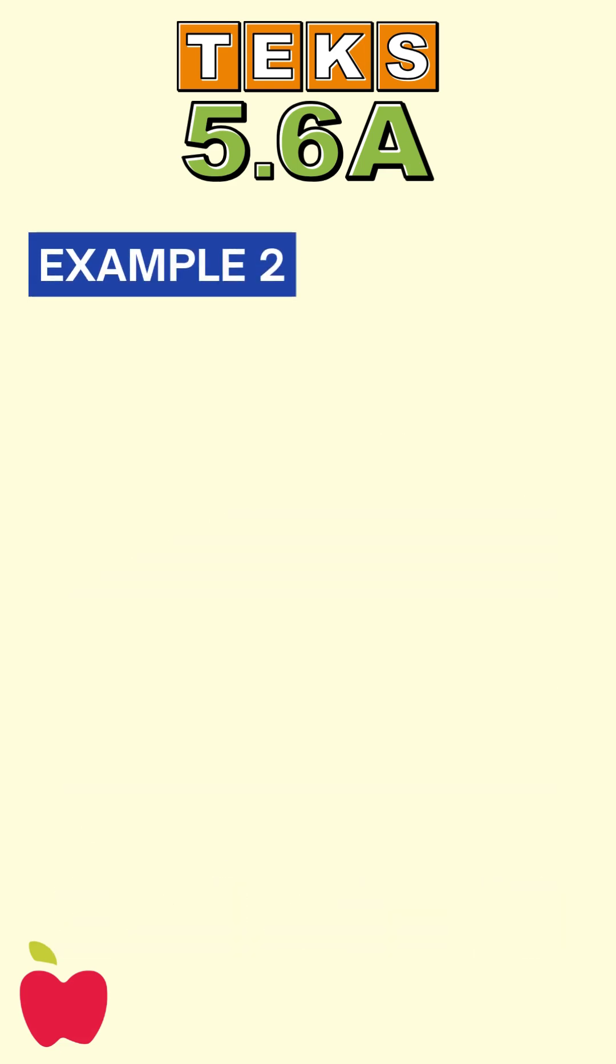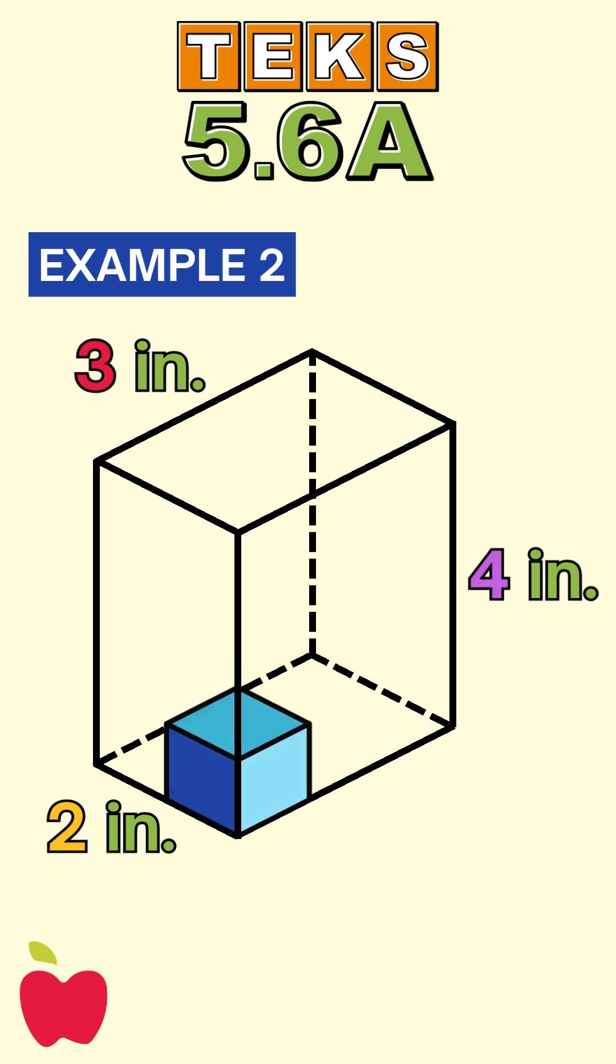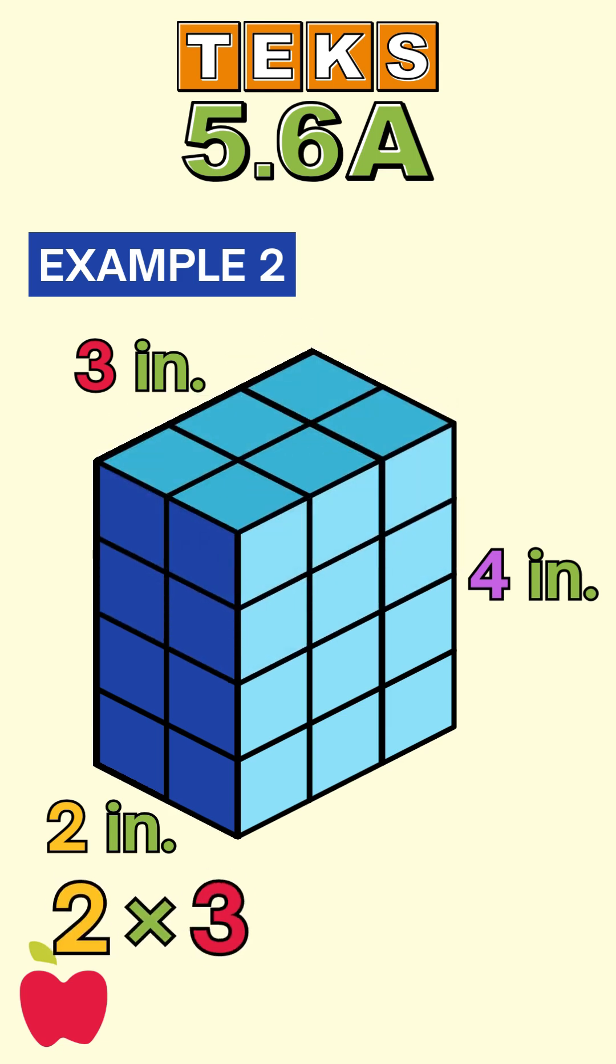Here's another example, this time using inches. A rectangular prism has dimensions two inches by three inches by four inches, and we're filling it with unit cubes that each have a volume of one cubic inch. To find how many cubes we need, we multiply two times three times four equals 24 cubic inches.